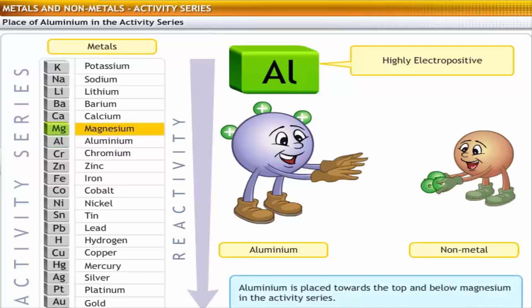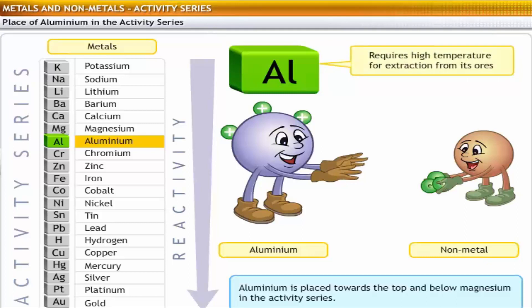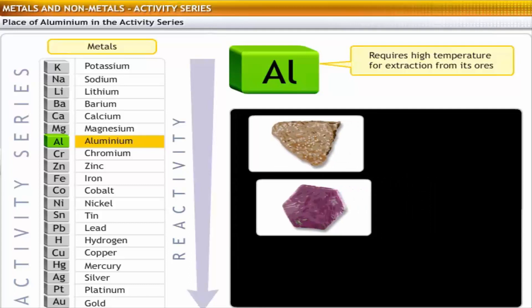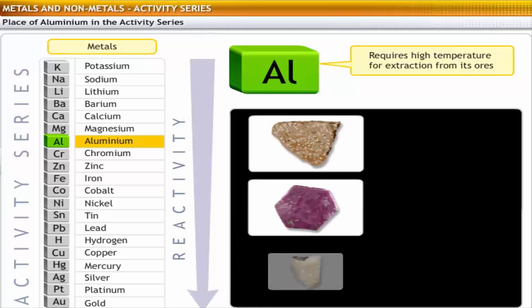Therefore, it is placed towards the top and below magnesium in the activity series. It is not viable to use carbon reduction as a method of extraction of aluminium because the metal needs to be heated to very high temperatures. Therefore, aluminium is extracted from its ores using electrolysis.